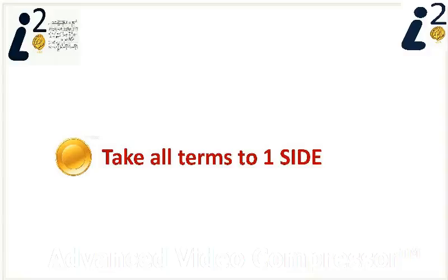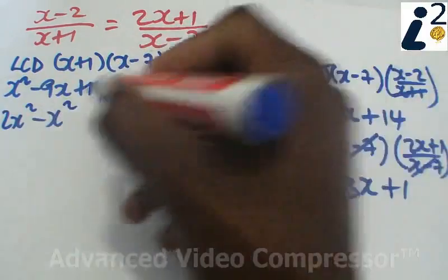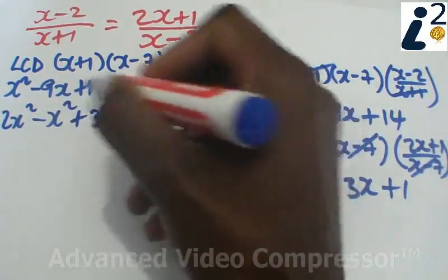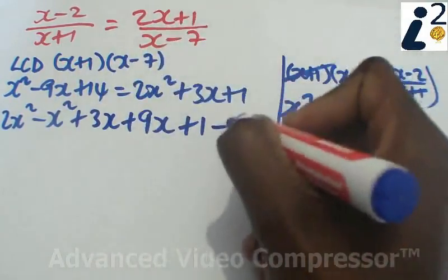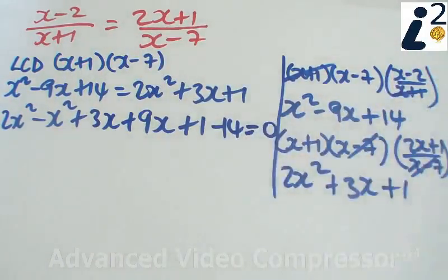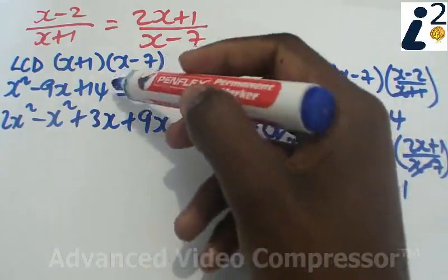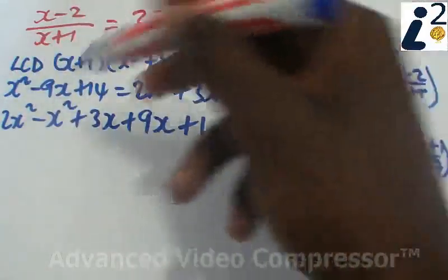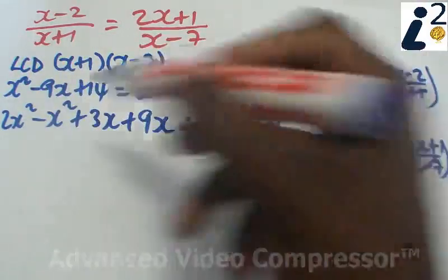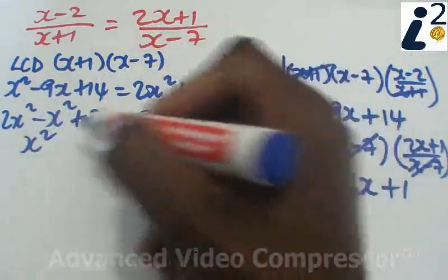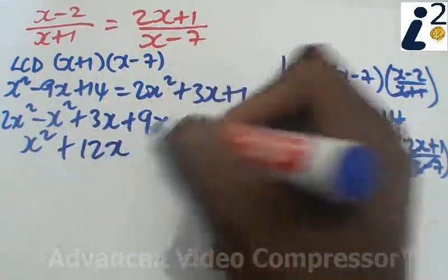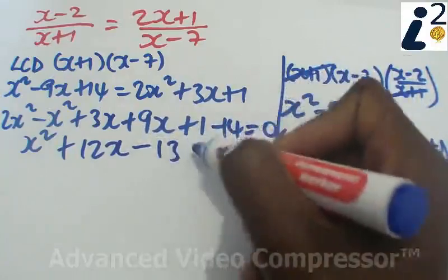Now we can solve this equation by taking all the terms to one side of the equation. So we have 2x squared minus x squared plus 3x, we take the 9x to the other side of the left hand side, we have 9x plus 1 minus 14, this is equal to 0. So what we did here is we took all the terms on the left hand side to the right hand side and they changed signs. So this is 2x squared minus x squared, 3x and 9x is 12x and we have a negative 13 there.